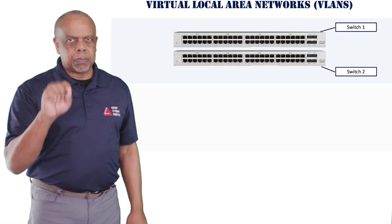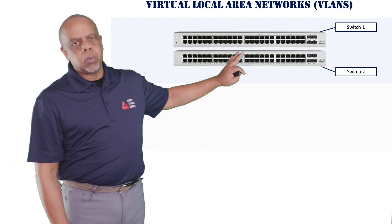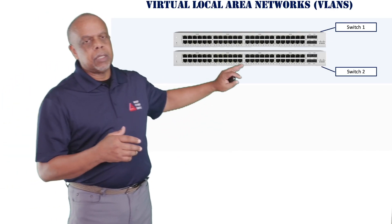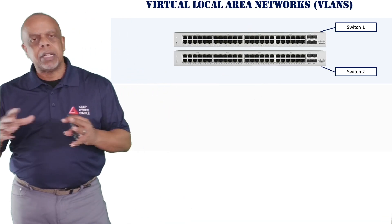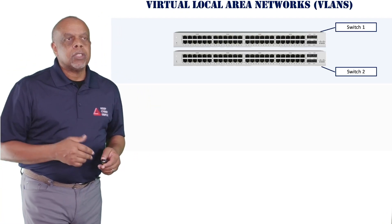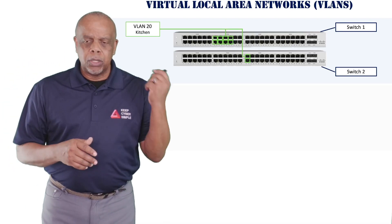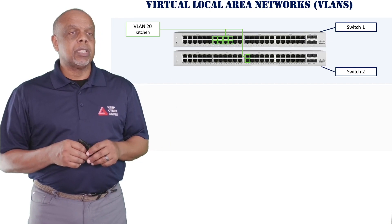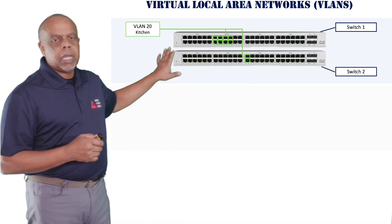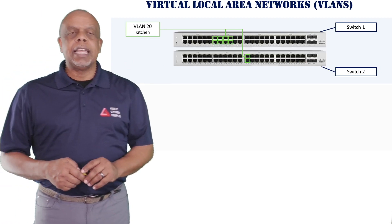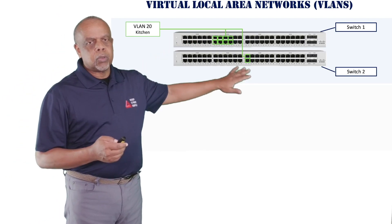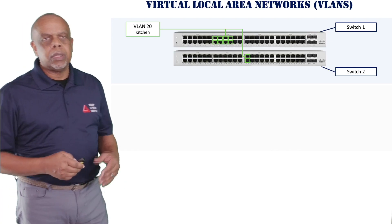Let's get into a little design to help explain this better. Let's say I have two 48-port switches — switch one and switch two — and one could be on one floor, another on a different floor. They don't have to be physically together as long as I can connect their trunk ports. Using the same building architecture from our last section, let's say we want all devices connected to the green ports to be assigned to the kitchen, and we'll assign them to VLAN 20. These ports on switch one and these two ports on switch two are part of VLAN 20 supporting the kitchen. The yellow ports will be VLAN 30 on both switches supporting accounting, and we'll also have VLAN 40 for sales.